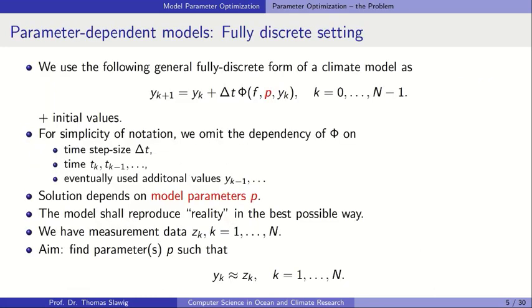To describe the parameter optimization problem, we go directly back to the fully discrete setting of a climate model. Since this is done on the computer, it makes no sense to discuss this in a continuous setting. I write it here with a one-step method — a forward time integration applying a time integrator. It makes no difference here whether this is a one-step or multi-step method. The important point is that we have the parameter vector inside.